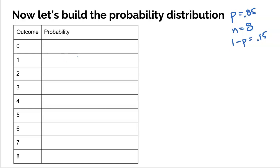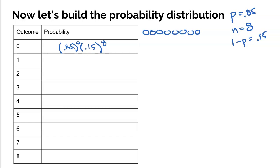So how do we calculate P(X=0)? She needs no successes and all eight to be failures. That's 0.15 times 0.15 times 0.15, eight times, which we can shorten to 0.15 to the eighth. Some students like to write 0.85 to the zero to emphasize that there are no makes, since anything raised to zero is one. There's only one way this can happen — all eight shots are misses — so there's no combination factor needed. Going to the calculator: 0.15 raised to the eighth gives us approximately 2.56 × 10⁻⁷, or 0.000000256. Pretty unlikely.